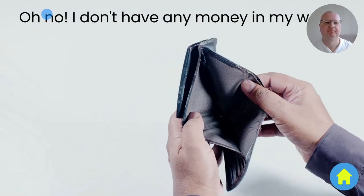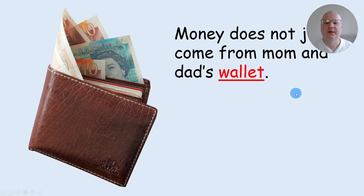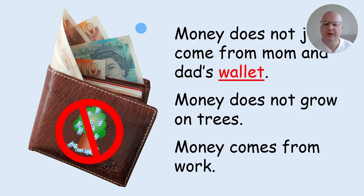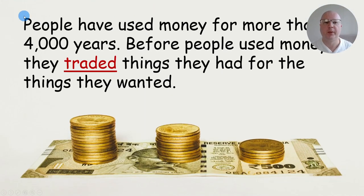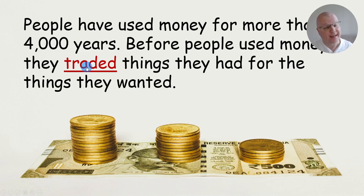The slide shows 'Oh no, I don't have any money in my wallet!' — this way you don't really need any translation because visuals do all the work. Next: 'Money does not grow on trees' and 'Money comes from work.' On the next slide you can say that people have used money for more than four thousand years. Before people used money, they traded things they had for the things they wanted. This word is also hyperlinked — if you click on it, it will take you to the slide which illustrates the concept of trade.